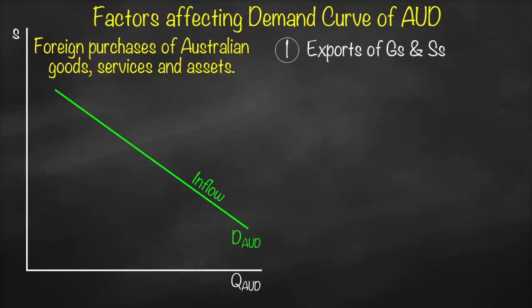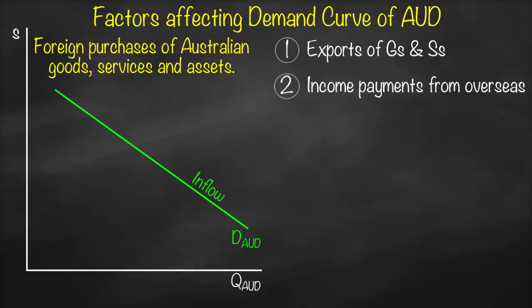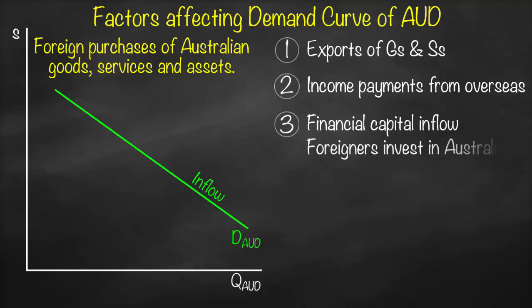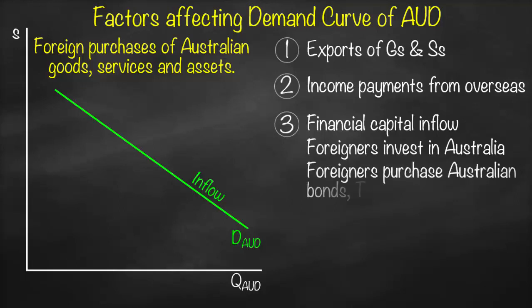Exports of goods and services: when we export we receive money — it's inflow, so it affects the demand curve. Higher exports shift demand to the right; lower exports shift it to the left. Another example is income payments from overseas — for example, if you provide consultation to an American firm, they pay you a salary or wage, which is an inflow to Australia. Financial capital inflow — such as FDI or portfolio investment — means foreigners investing in Australia or purchasing Australian bonds, treasury bonds, or shares, which is also inflow and affects demand.